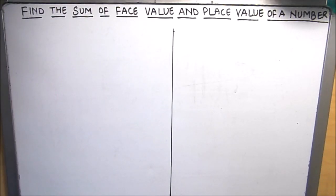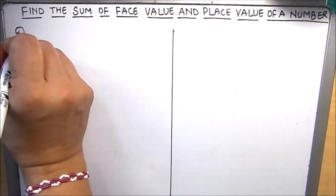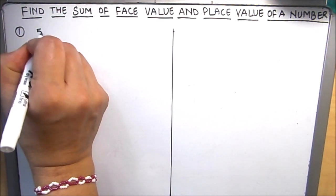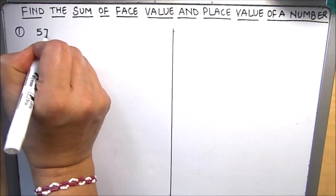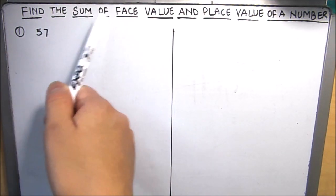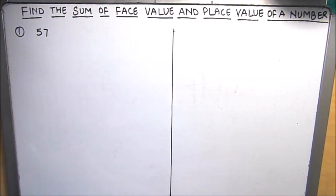Hello everyone, today we are going to learn how to find the sum of face value and place value of a number. This is a requested video and we will be solving two examples here. Let's take our first example as a two digit number — let's take 57 — and we need to find the sum of face value and place value of 57.